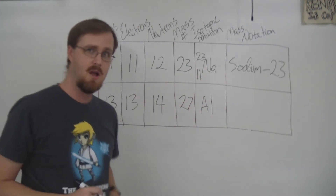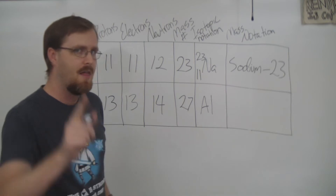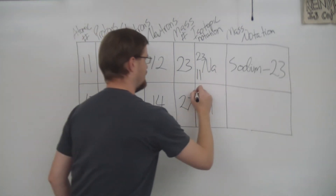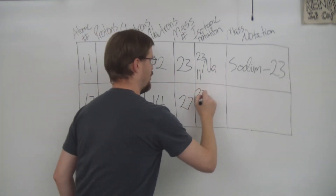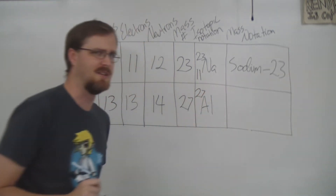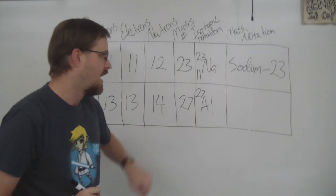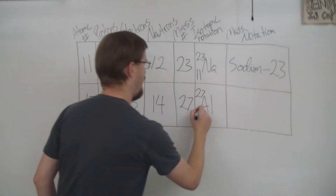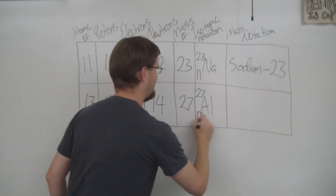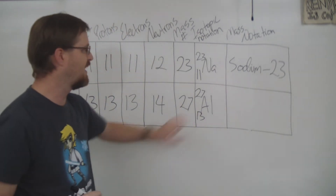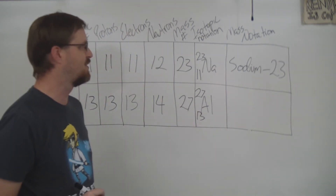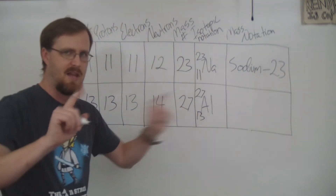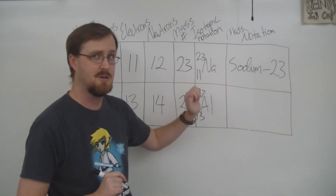Now on to the second row for aluminum. Same thing as before — the top left corner is the mass number, so in this case 27, and the atomic number is 13. We have now successfully filled in the isotopic notation.